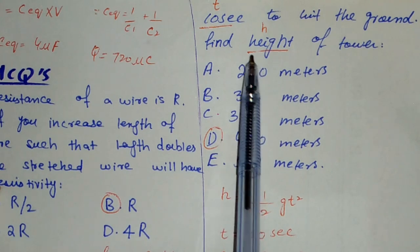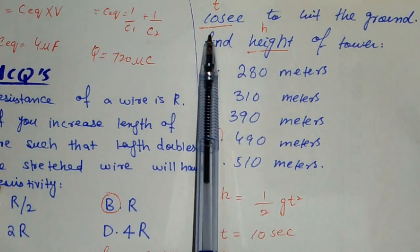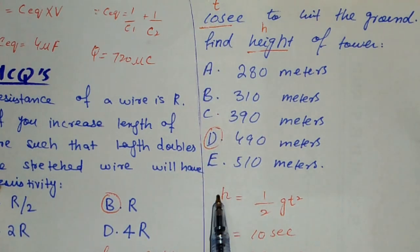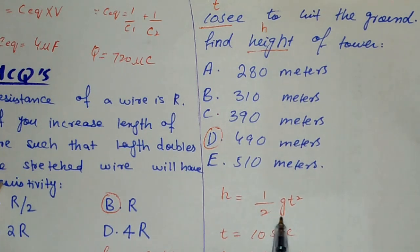We have height and only time. The formula is H equals 1/2 g t squared. We have time, so we'll simply put 10 here with g equals 9.8. Solving this gives us 490 meters.